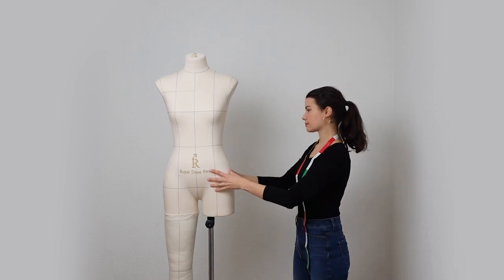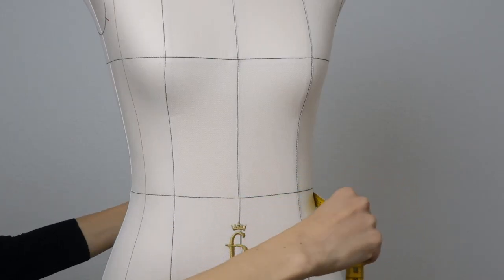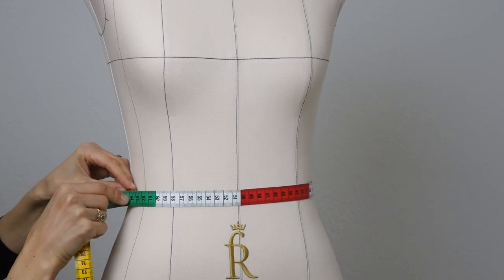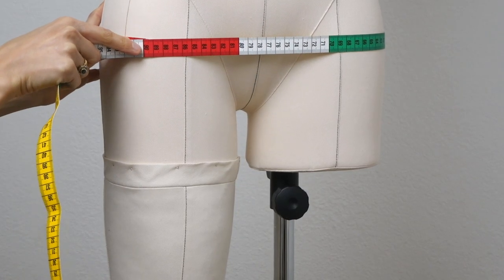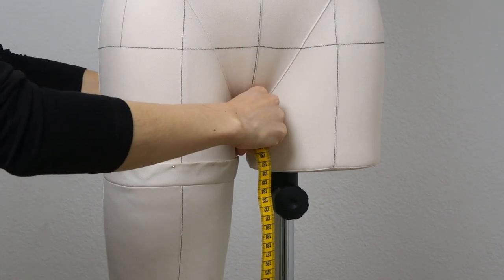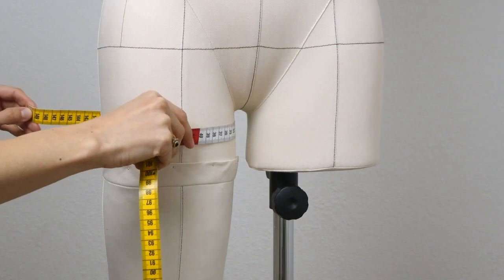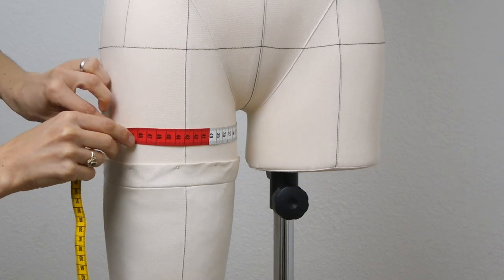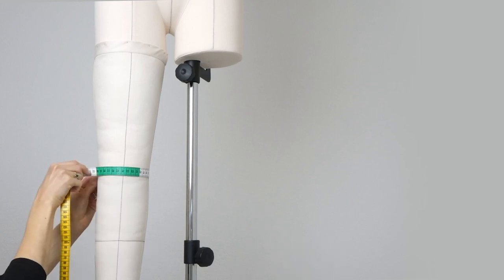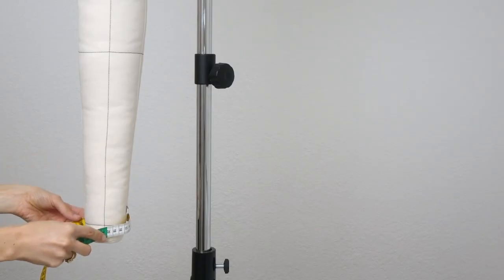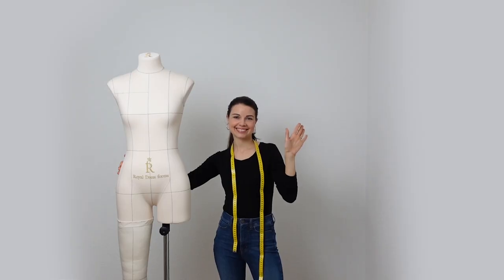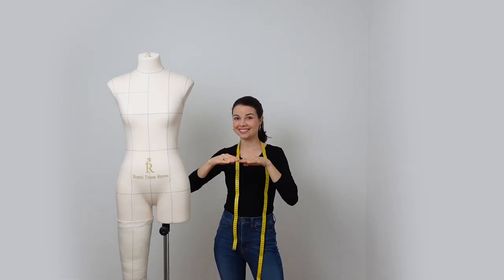Here are the measurements that we will need: our waist measurement, our hip measurement which is to be taken at the fullest part of the hip area, our thigh measurement to be taken slightly below the crotch where our thighs are the fullest, our knee measurement as well as our ankle measurement. Voilà, we are already done with the circumferences.